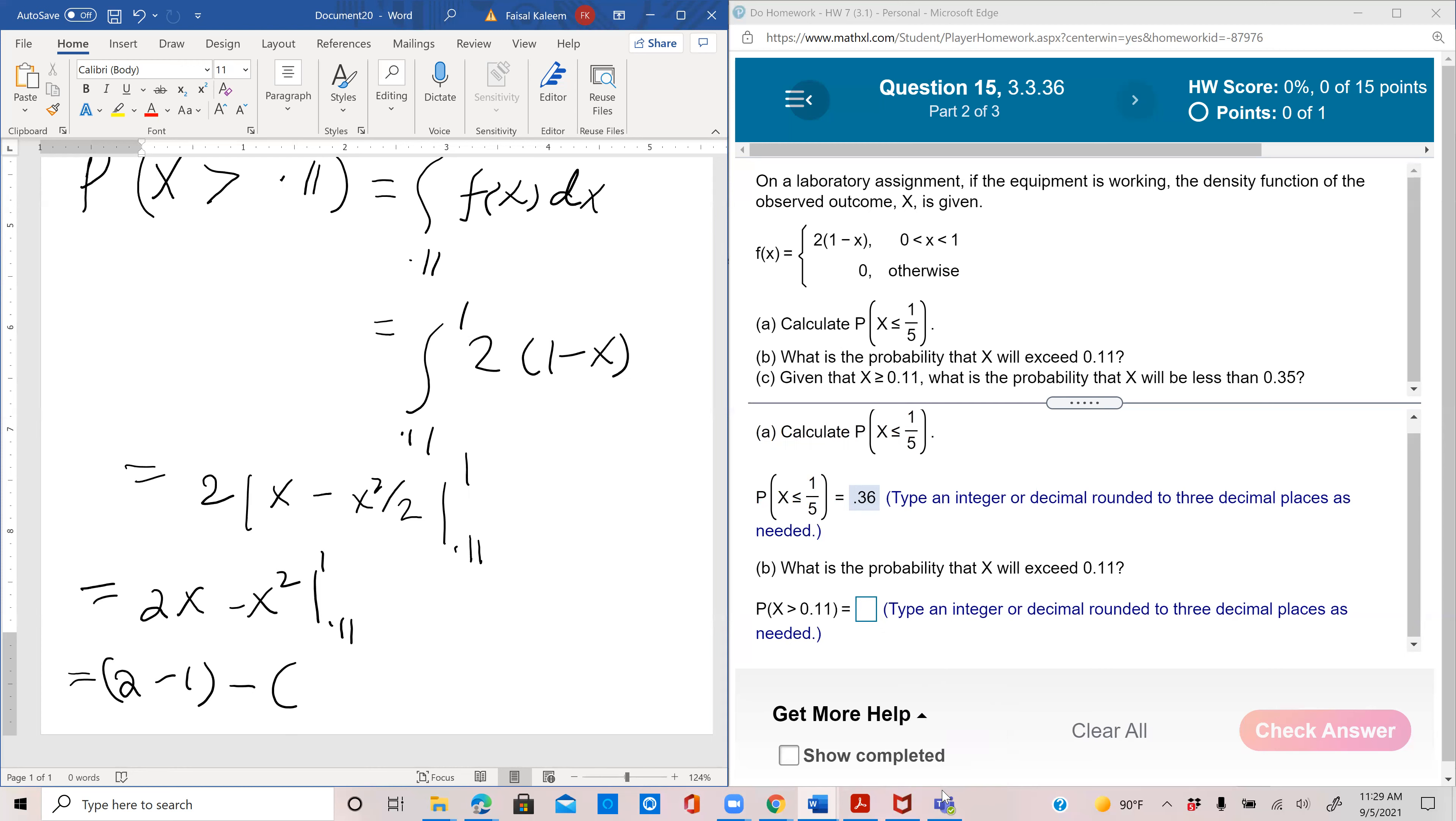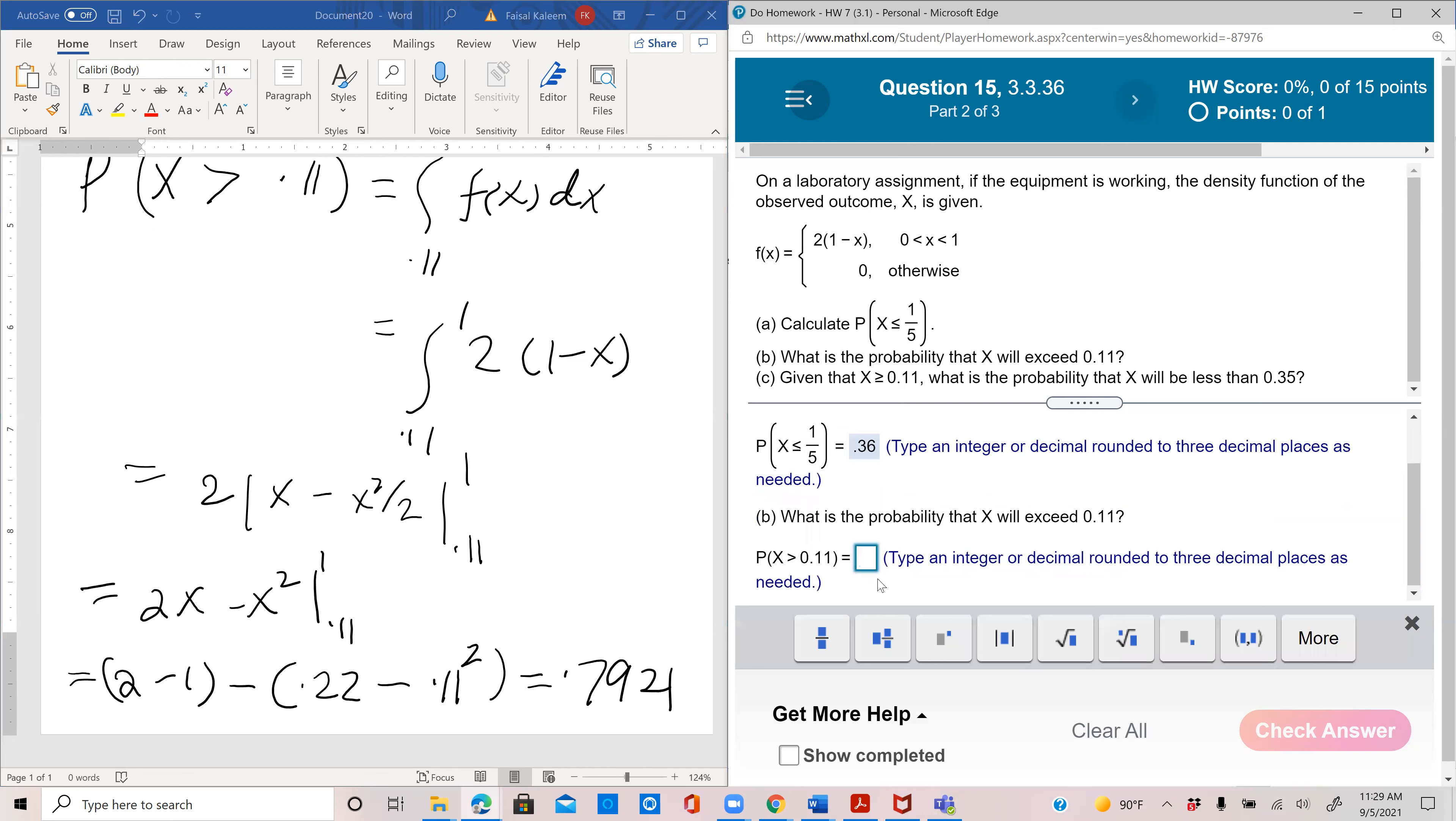So two times 0.11 is 0.22 minus 0.11 squared. So let's see, 0.78 plus 0.0121. So 0.7921.